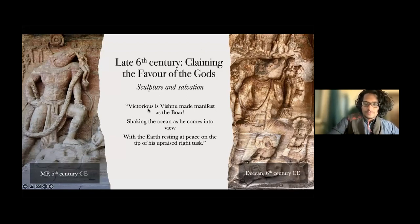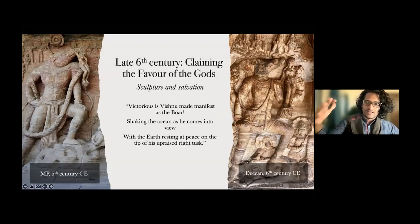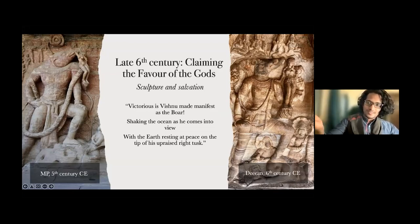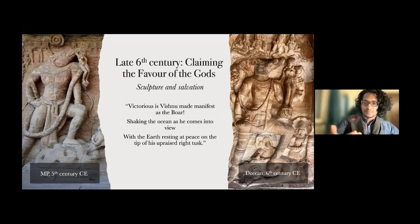A verse from the preamble to most Chalukya land grants reads: 'Victorious as Vishnu made manifest as the boar, shaking the ocean as he comes into view, with the earth resting at peace on the tip of his upraised right tusk.' Just as Varaha rescued the earth which is now at peace, so too is it at peace because of the Chalukya kings. It's very interesting how the Chalukyas use both art and religion to legitimize themselves as a newly emerging imperial power in the Deccan in the late 6th century.